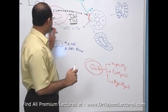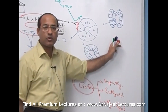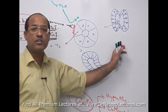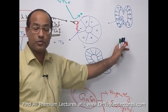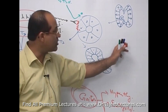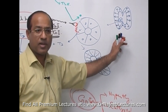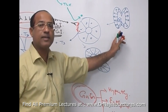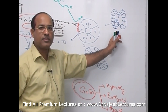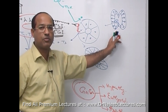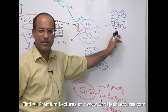In Graves' disease, there is diffuse enlargement of the gland — a diffuse goiter — and along with that there is a thyrotoxic state, because this goiter is producing excessive amounts of T3 and T4.